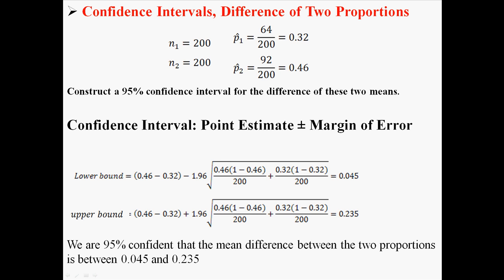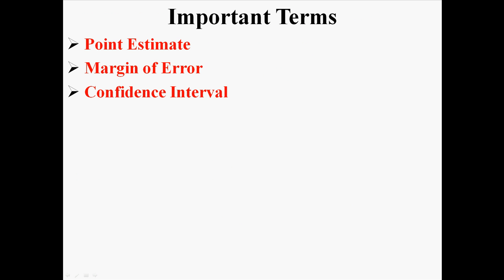We are 95% confident that the mean difference between the two proportions is between 0.045 and 0.235. That's how you construct confidence intervals for the difference of two proportions.